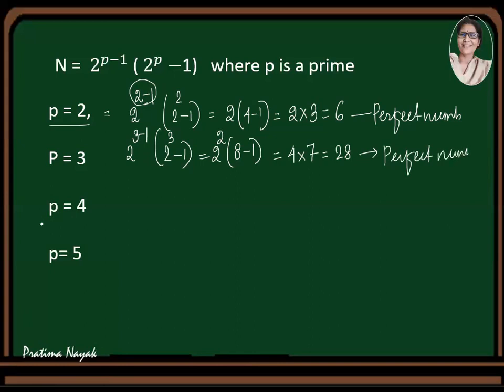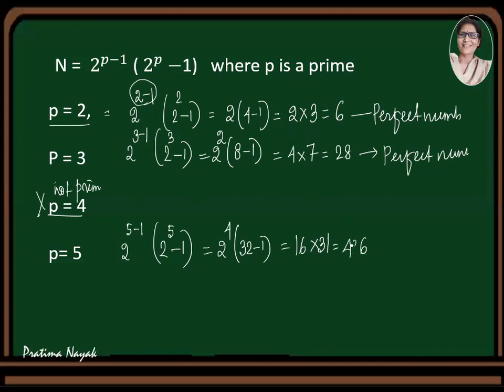So can I put in the formula p value 4? No, because p equals 4 is not prime. So then I will go for 5. 5 is a prime number, so I will write 2 to the power 5 minus 1, multiply by 2 to the power 5 minus 1, that is equal to 2 to the power 4, so multiply. This will be how much? 2 to the power 5 is 32, 2 multiplied 5 times, so 32 minus 1 is 31, so 16 multiplied by 31. You can multiply 16, 6 times 1, 6, 4, 9, 6. So 496 is the third perfect number.